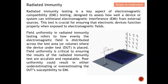Field uniformity is critical to ensure that the results of radiated immunity tests are accurate and repeatable. Poor uniformity could result in either underestimating or overestimating the DUT's performance. For example, if one point has a much lower field than another, the result depends on the DUT's orientation — it may pass the test in one position but fail in another. Field uniformity ensures that all 16 points have approximately the same volt-per-meter value, so the field is evenly distributed.